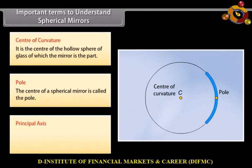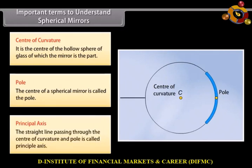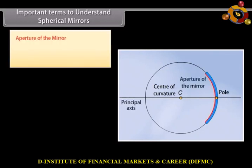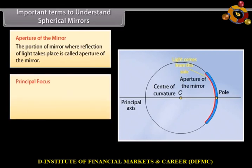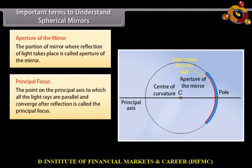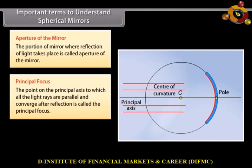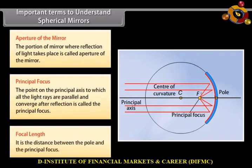Principal axis is the straight line passing through the center of curvature and pole — it is called the principal axis. Aperture of the mirror: the portion of the mirror where reflection of light takes place is called the aperture of the mirror. Principal focus: the point on the principal axis to which all the light rays parallel to it converge after reflection is called the principal focus. Focal length: it is the distance between the pole and the principal focus.